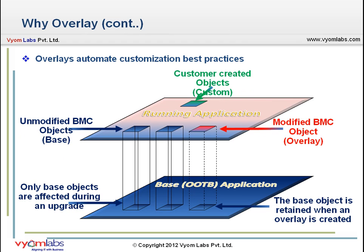The only exception is when an overlaid object is deleted during an upgrade — its overlay is also deleted. At runtime, AR System server and client, such as mid-tier BMC Remedy user, use the overlay objects in place of origin objects. For example, if a filter is to be fired during an operation, AR System detects whether that filter has an overlay and executes the overlay filter instead. Or if the client needs to get a copy of the overlaid object from the server, it gets the object overlay instead.